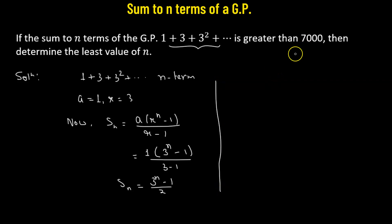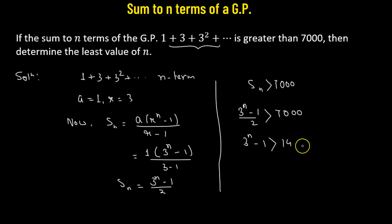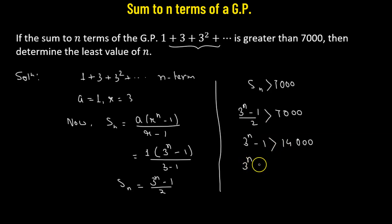Now there is a condition that the sum Sₙ is greater than 7000. Plugging in, we have (3 raised to the power n minus 1) divided by 2 greater than 7000. So 3 raised to the power n minus 1 will be greater than 14000. Since 2 is a positive number, multiplying throughout does not affect the inequality sign. This gives us 3 raised to the power n greater than 14001.